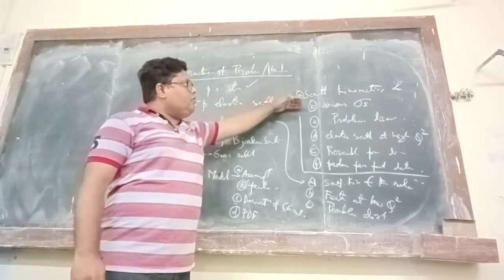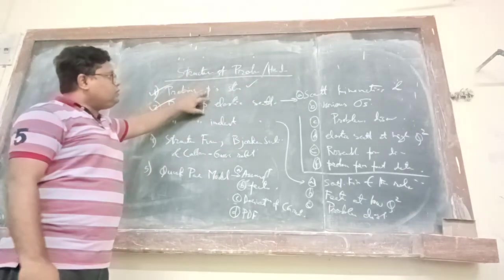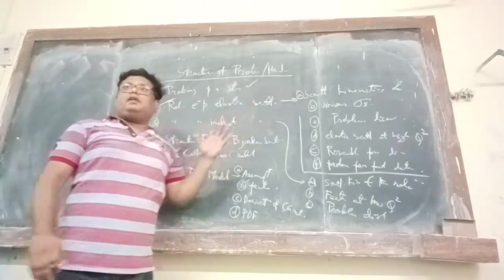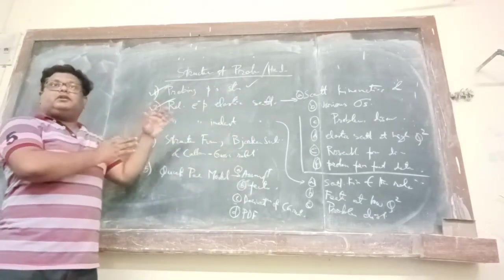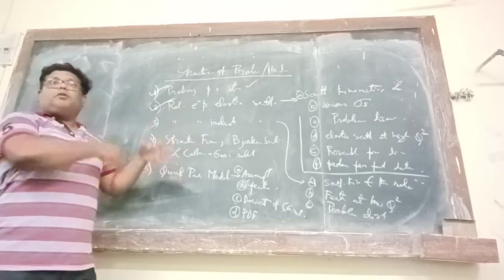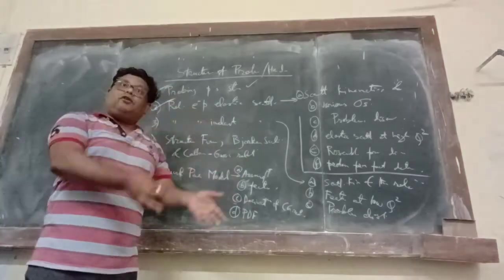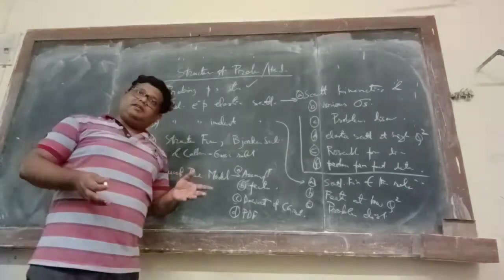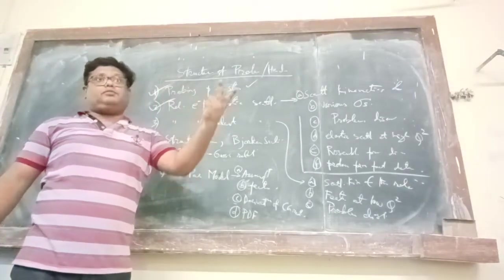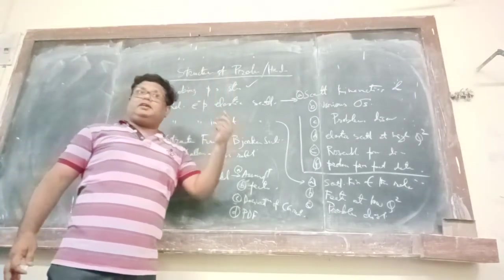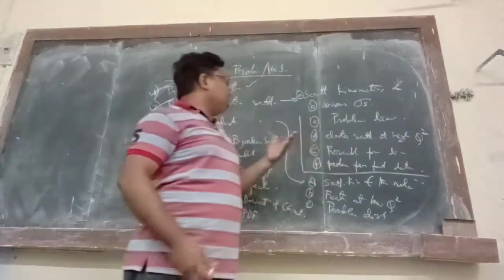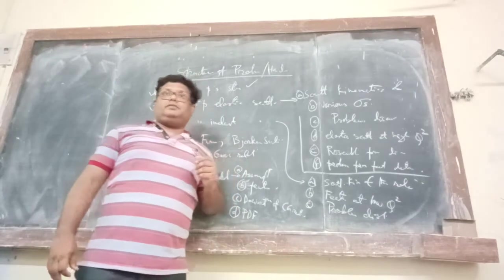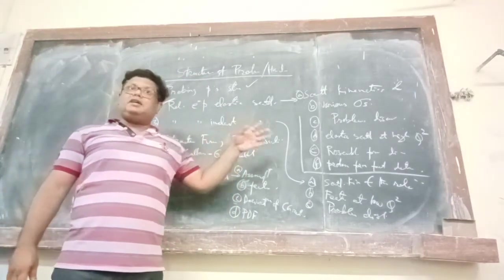Next, we talked about the various cross-sections, the evolution of the cross-sections. So we started from Rutherford scattering, then Mott scattering, then introduced form factors. Then we introduced two types of form factors: electric and magnetic. And then we arrived at the Rosenblatt formula. We discussed these things.